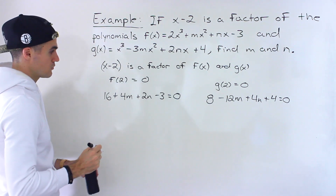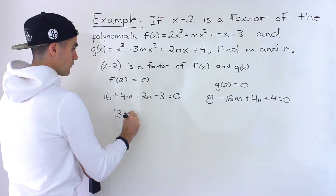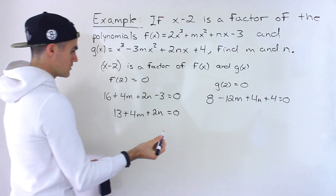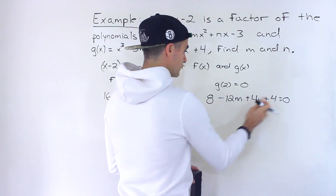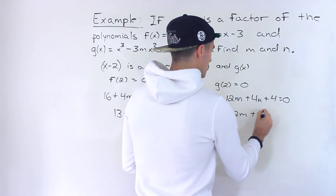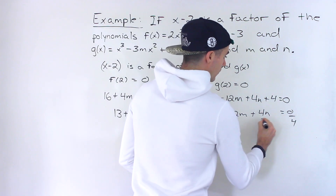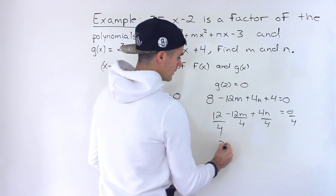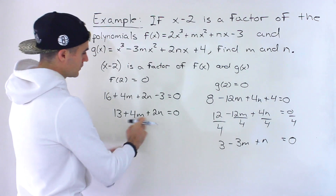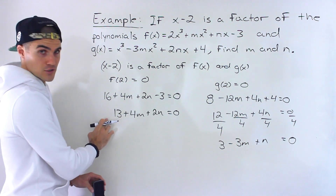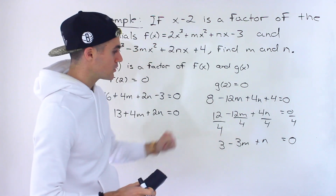Those are the two equations. Simplifying the first one: 16 minus 3 gives us 13, so we have 4m plus 2n equals negative 13. Simplifying the second: 8 plus 4 is 12, so we have 12 minus 12m plus 4n equals 0. Notice we can divide everything in the second equation by 4, giving 3 minus 3m plus n equals 0. I usually divide when it won't produce fractions — in the first equation dividing by 2 would give a fraction 13 over 2, so we leave it.